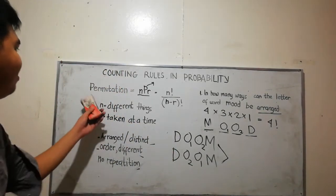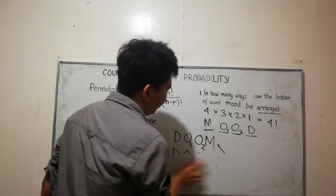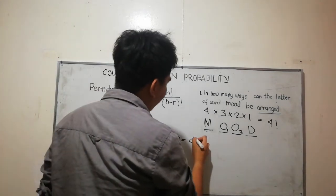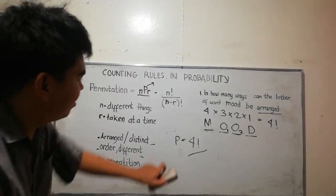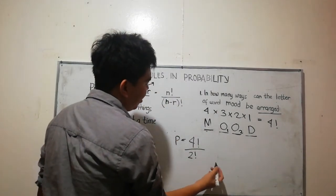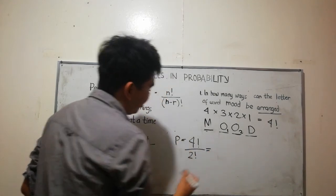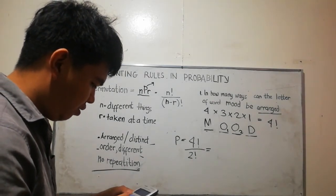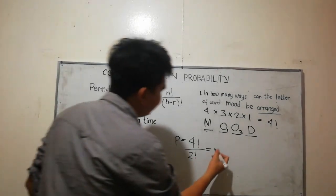Take note that in permutation it should be no repetition. To eliminate the repetition, the permutation is four factorial, assuming that these four letters are different, over two factorial. This two factorial is for the repeated O, to eliminate the repetition. So permutation is equal to 12. The number of ways is 12.